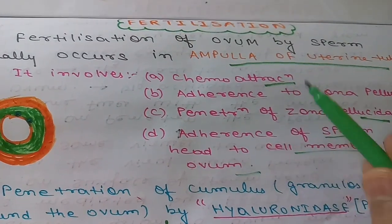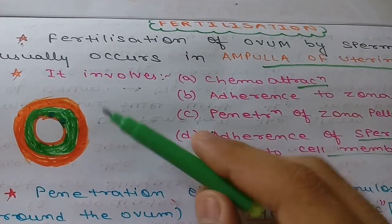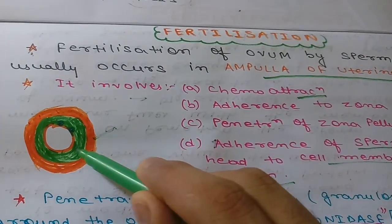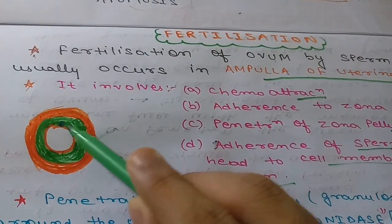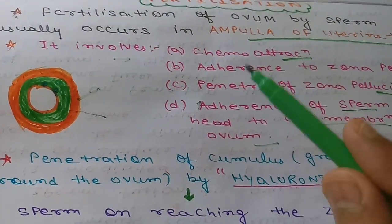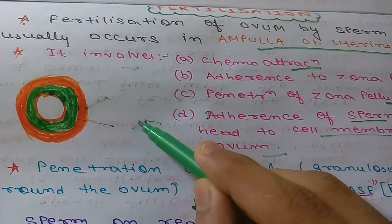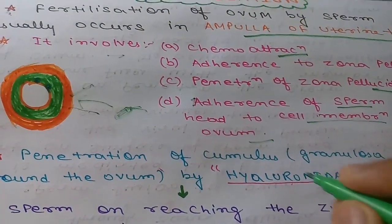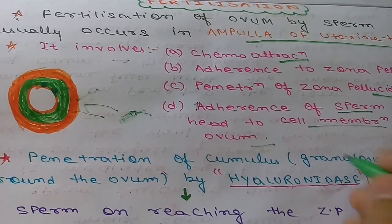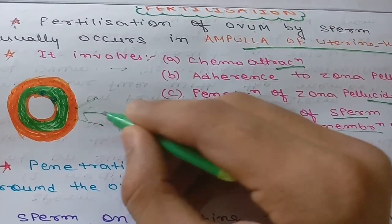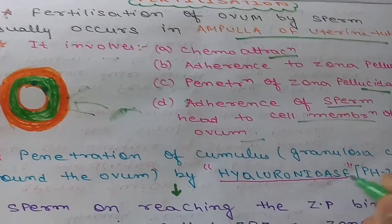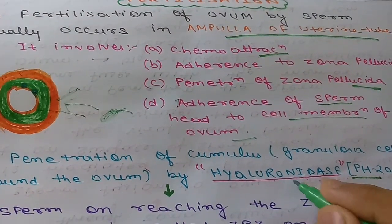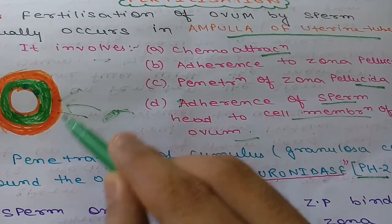Now we will discuss a little bit about the ovum. The ovum is surrounded by granulosa cells and zona pellucida. The first step is chemo attraction — the sperm is chemo attracted by substances released from the ovum and moves towards it. The granulosa cells are then penetrated by the sperm through the release of the enzyme hyaluronidase, and the particular hyaluronidase is PS20.